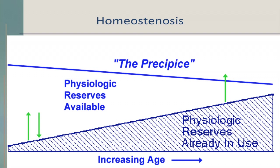It's very important that we understand this precipice that many of our older patients are standing on. When we're younger, we've got lots of reserve. But as we age, almost linearly, we rely more and more on our physiologic reserves. That's why somebody younger and more robust may withstand a bout of pneumonia in a week in the hospital much better than a frailer, older patient who is already operating on all their physiologic reserves. When patients get to the point where all reserves are in use and they need to withstand a serious health event, they can fall off the precipice. This concept is called homeostenosis.